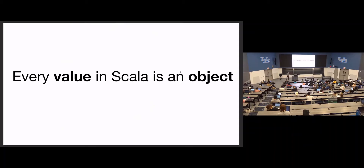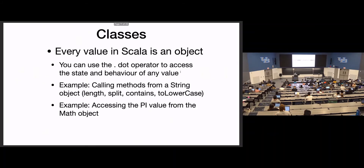Every value in Scala is an object — everything we work with in Scala is an object. If you're coming from Java, you have primitives and objects; in Scala, there's no such thing as a primitive — everything is an object absolutely. The implication is that no matter what you have — any value, any variable, anything — you have the dot operator which can access state and behavior. If you type the number 5 on your keyboard, you have a literal int 5 and you can put a dot right after it to access its state and behavior, because it's an object.